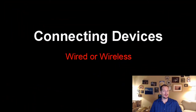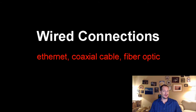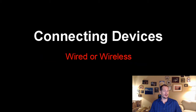We've been talking about creating a network, and one of the first things we need to do is figure out how we're going to connect our devices. In the previous video, we saw we could connect devices using wires, and the three most common types of wired connections are Ethernet, coaxial cable, or fiber optic wires.